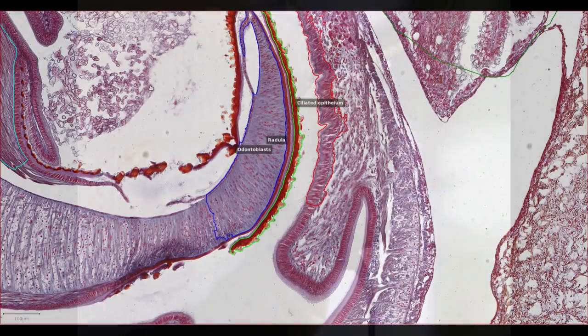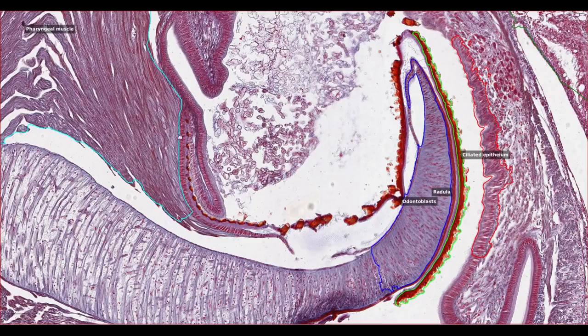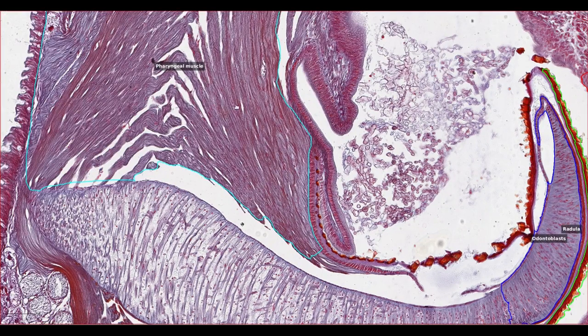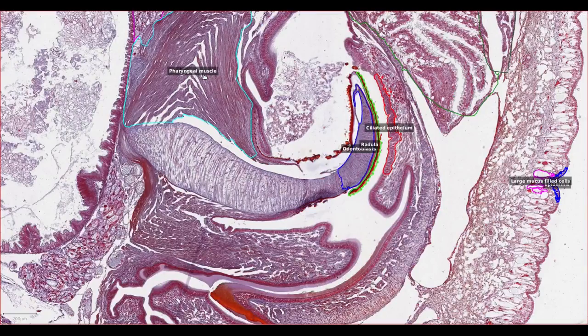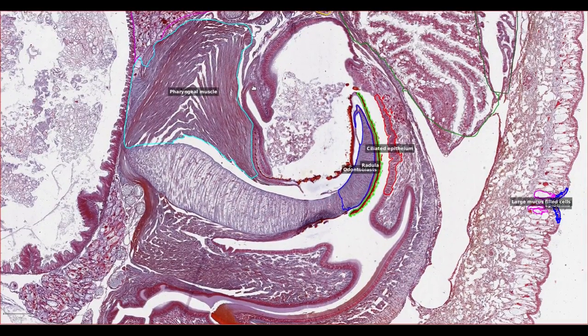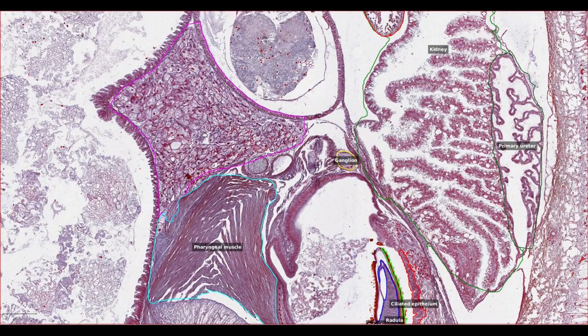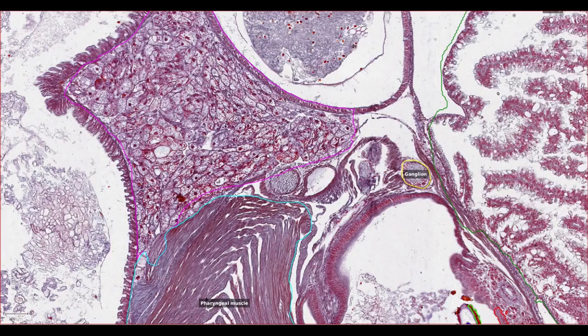The movement of the radula is controlled by the pharyngeal muscle, which we can see attached to the radula. Around the mouth and pharynx, there are some aggregates of large vacuolated cells. These are salivary glands.